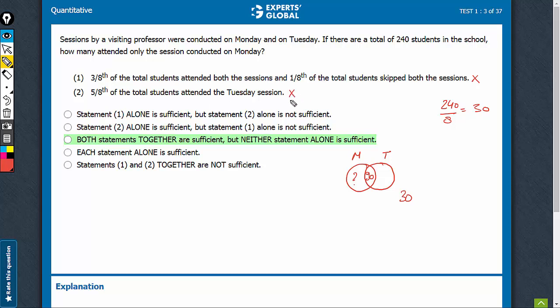When we combine the two, this tells 5/8th attended the Tuesday session. The total for Tuesday is 5/8th, 5 into 30, that is 150. 150 is all of Tuesday. 90 is here, so 60 is here.